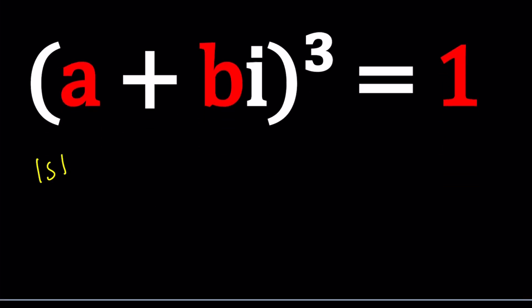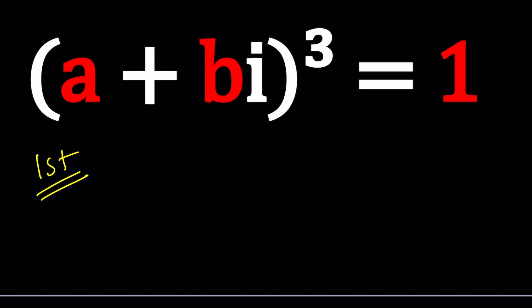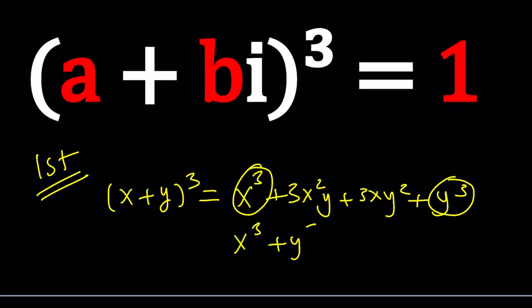Let's start with the first method. For my first method, I'm going to go ahead and expand this. What is x plus y to the third power? By the binomial theorem, it's x cubed plus 3x squared y plus 3xy squared plus y cubed. You could also write it differently in a more compact form.